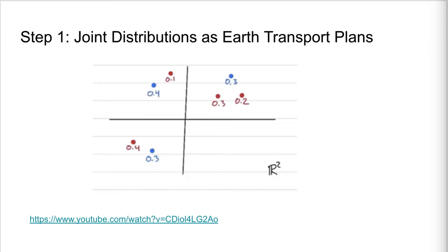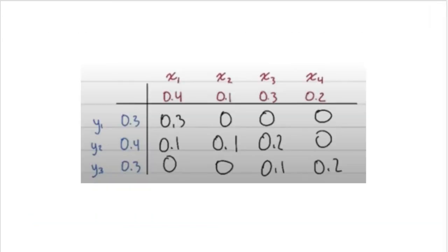For that, we need a transport plan that will tell us how much sand to take from each area of x, and where to put it to create the right high-density areas for y, the blue distribution. Here is one optional transport plan. There are many others. Each cell tells us how much to take from a point x, and put in a point of y.